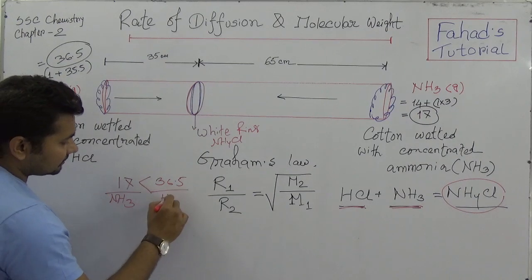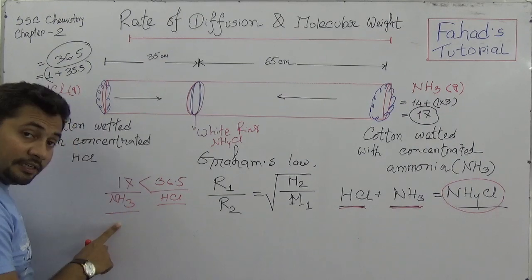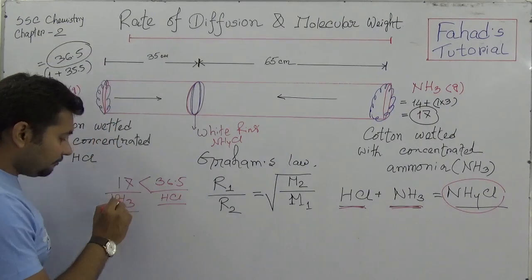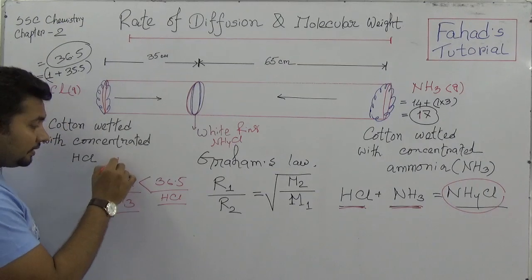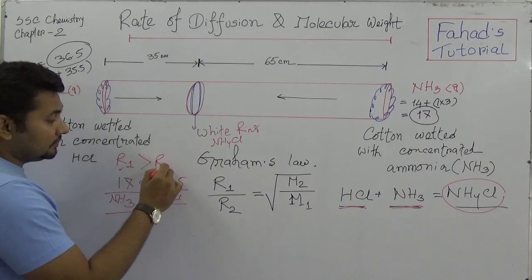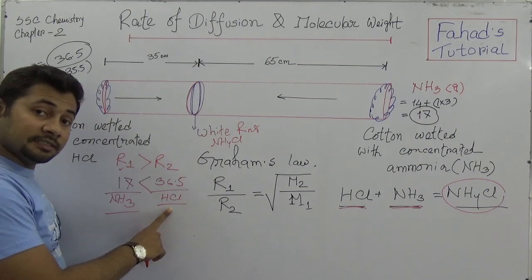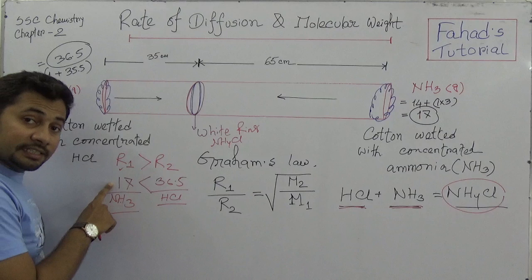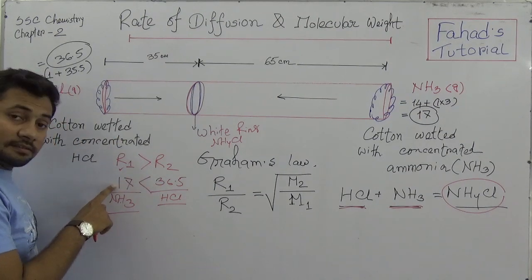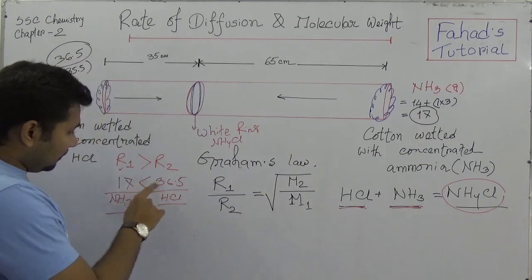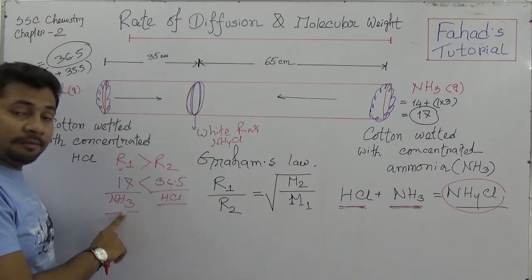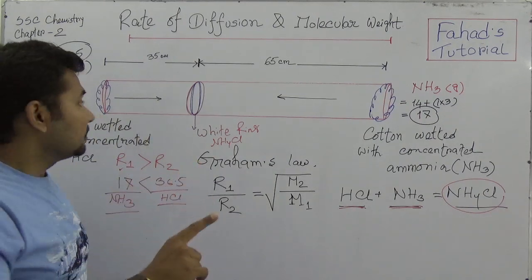Since 17 is much less than 36.5, ammonia has a comparatively lower molecular weight than hydrochloric acid. Therefore, according to Graham's Law, the rate of diffusion or effusion of ammonia will be higher than that of hydrochloric acid.